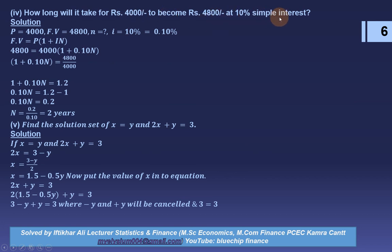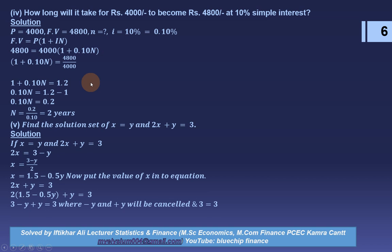Question 4: how long will it take for rupees 4,000 to become rupees 4,800 at 10% simple interest? Principal is 4,000, future value is 4,800, interest rate is 10%. The missing value is n, the time period. Applying the future value formula: FV = P(1 + in), so 4,800 = 4,000(1 + 0.10 × n). Solving gives n = 2 years.